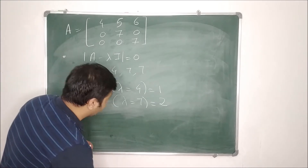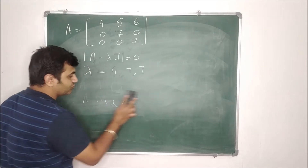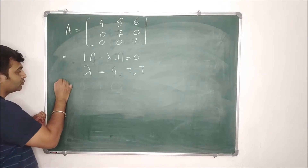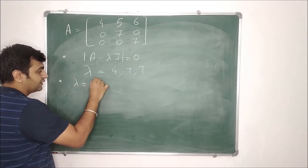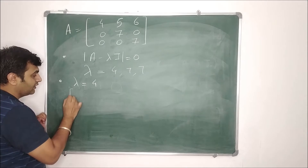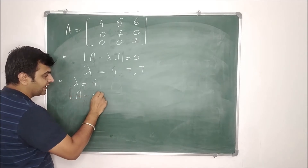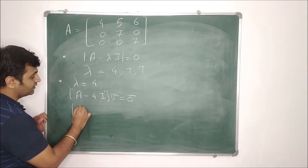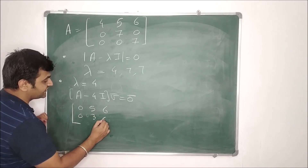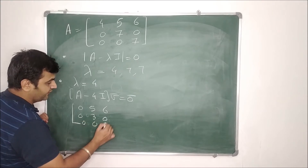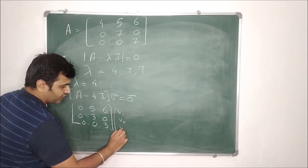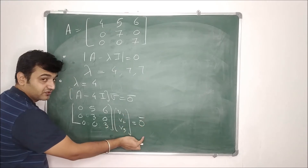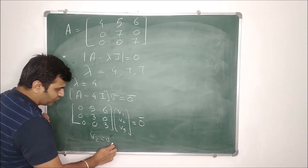Now we have the eigenvalues and algebraic multiplicities. Next, find the eigenvectors. Let's first find the eigenvector for lambda equal to 4. You solve the system A minus lambda I times V-bar equals zero. If you do this, you get the matrix with entries 0, 5, 6; 0, 3, 0; 0, 0, 3 applied to V1, V2, V3 equals the zero vector. Solving this, V2 will be 0, V3 will be 0, and you get no condition on V1.